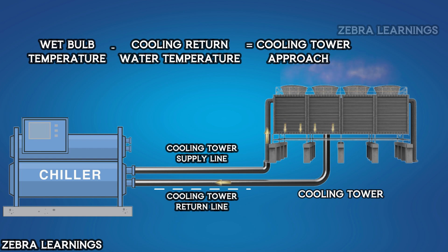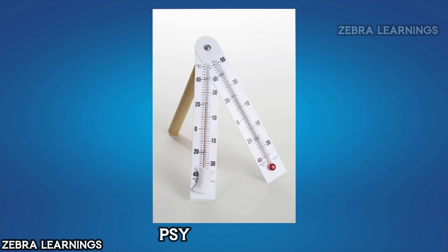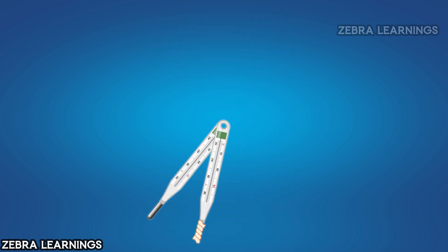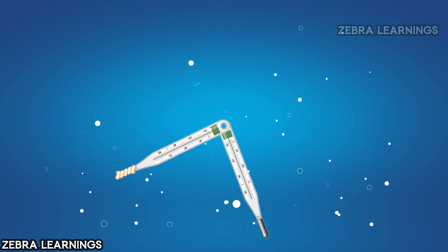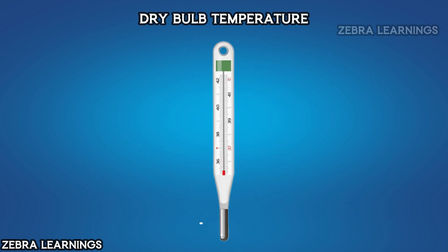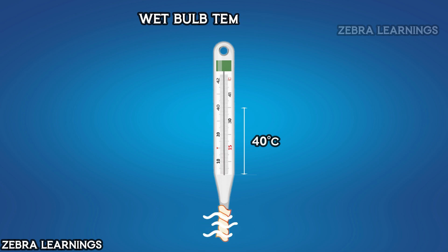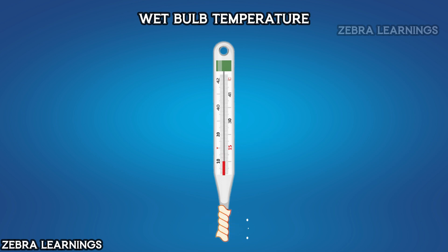Now let's see how to measure wet bulb temperature using a psychrometer. Take a psychrometer that has two thermometers. Wrap a wet cloth around the bulb of one thermometer and leave the other thermometer dry. When you rotate the psychrometer, all the heat in the air is transferred to the bulb. The mercury in the bulb expands according to the heat, and we can measure the temperature by how far it expands. In the wet bulb, the heat from the air is also transferred to the bulb, causing the mercury to expand.